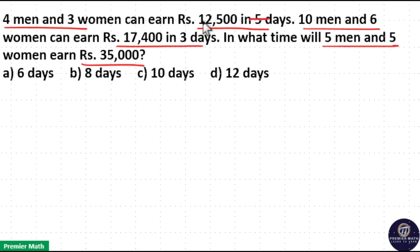Here 5 days $12,500 means in 1 day it is $2,500. 3 days $17,400 means in 1 day 3 equals 5 times 70, 8 times 24. So in 1 day it is $5,800.